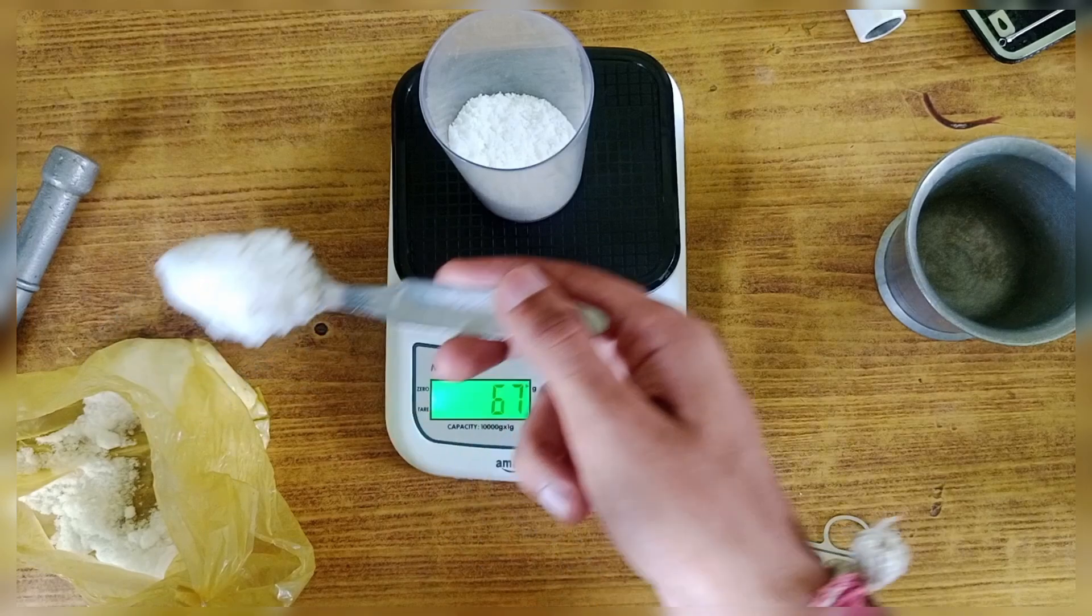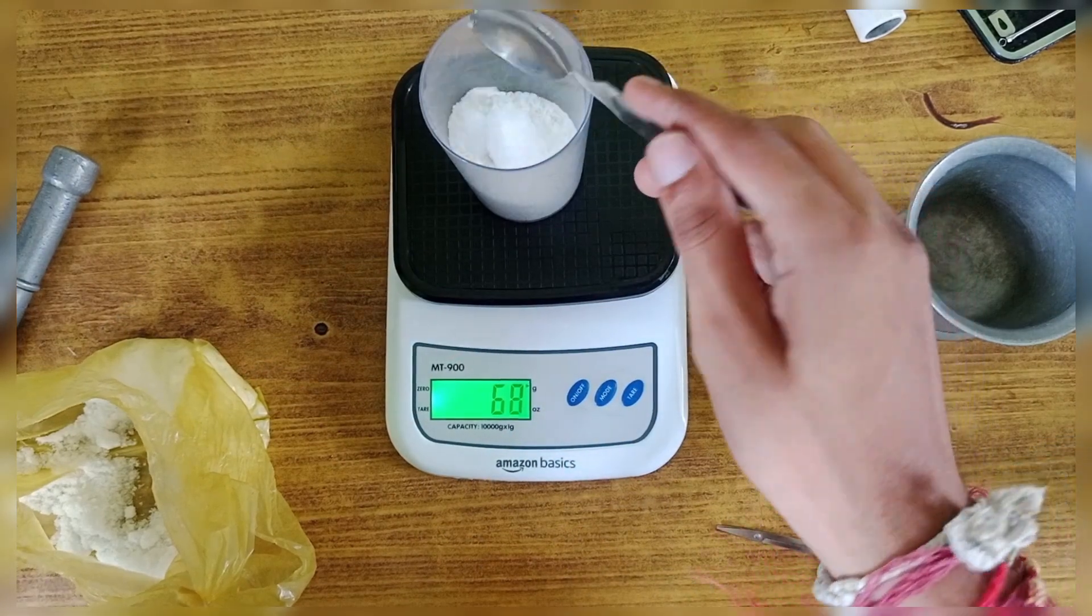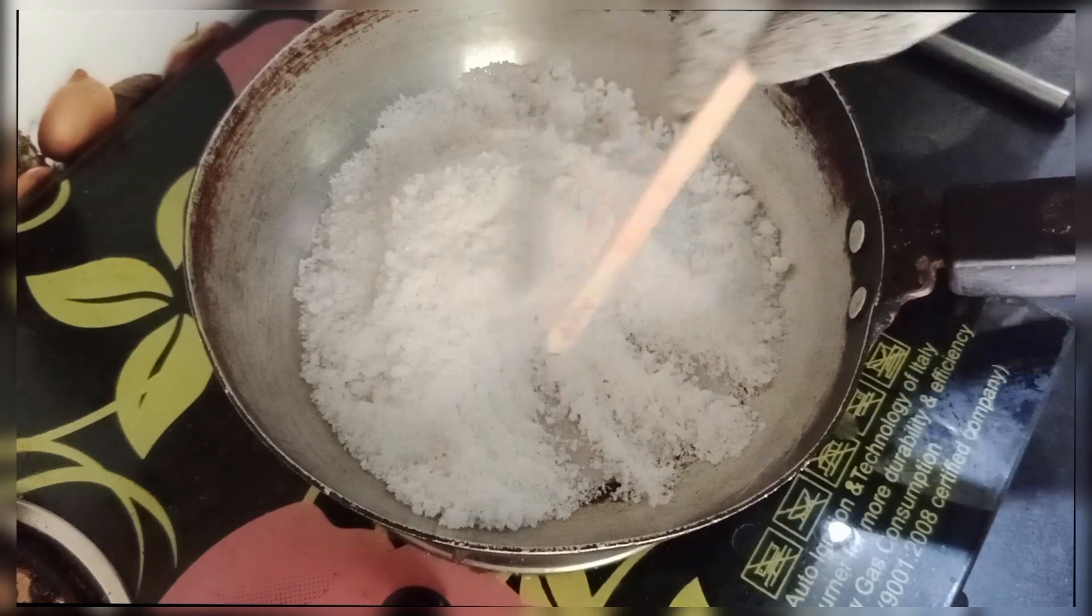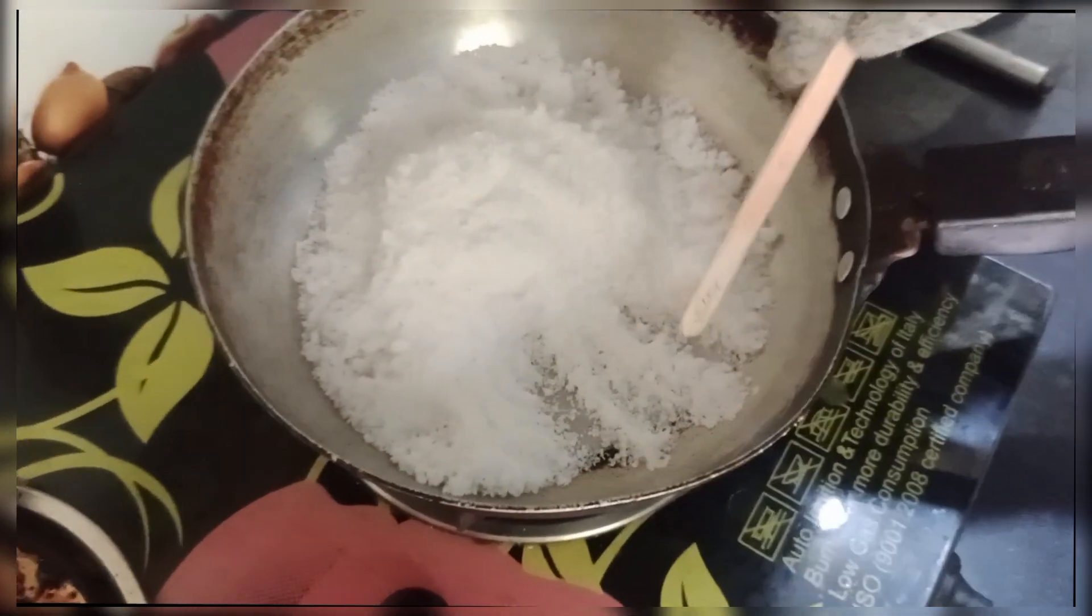I measured the ingredients on the scale and prepared a 200 gram batch of fuel. With the grain mold ready, I started cooking again. This time, I cooked the fuel carefully, and it turned out perfect.